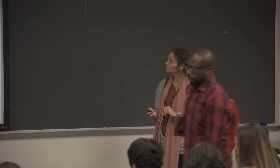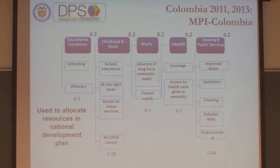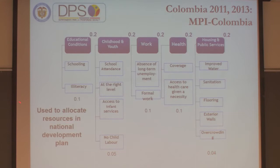Each of the five dimensions is equally weighted, and each is represented by a series of indicators. There are actually 15 indicators total. Within each dimension, each indicator is equally weighted. So if one dimension is 20%, and there are five indicators, each is 4%; if there are two, each is 10%, and so on. These 15 indicators were all in the National Development Plan, and the weights are arbitrary and equal within dimensions.